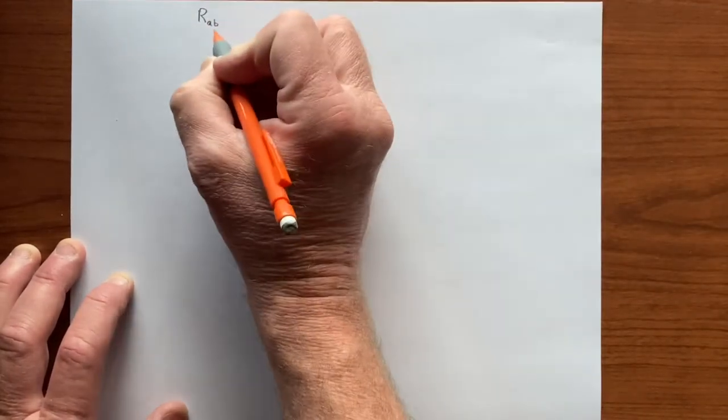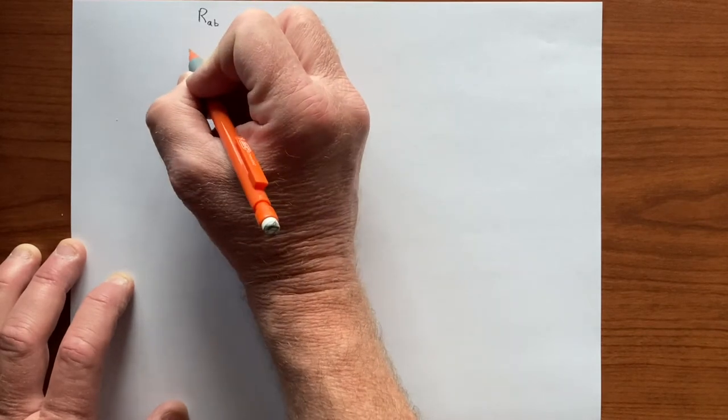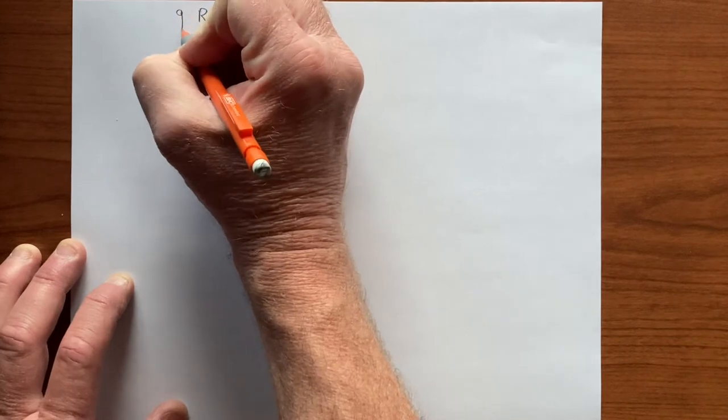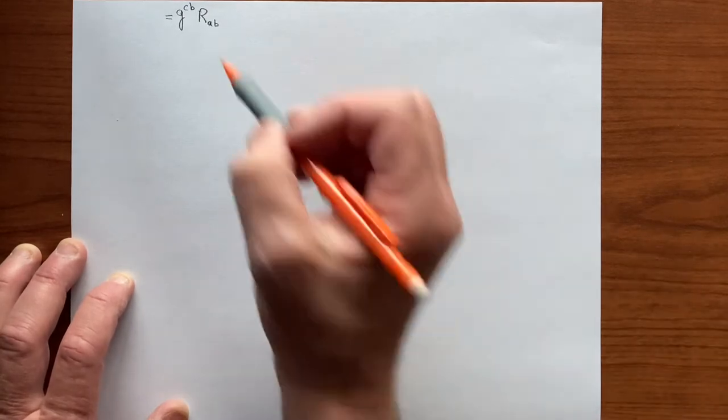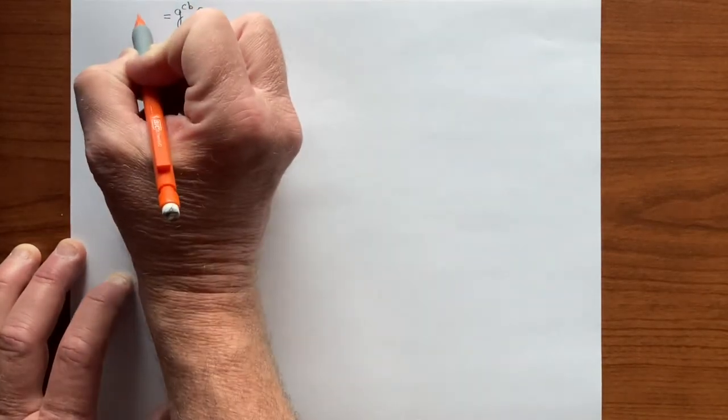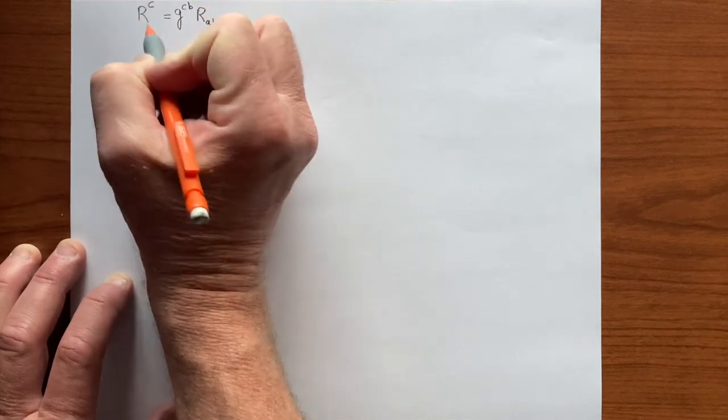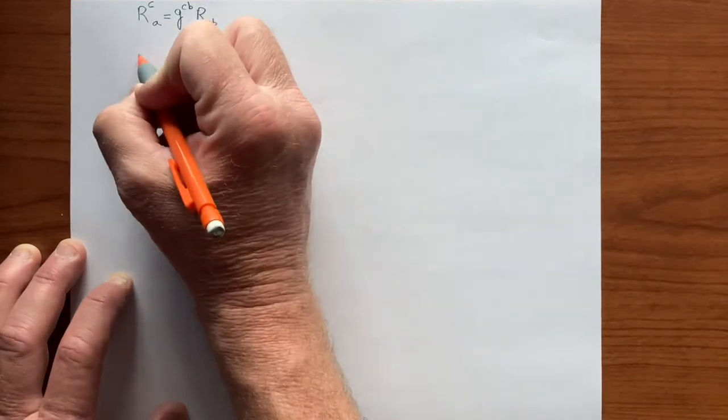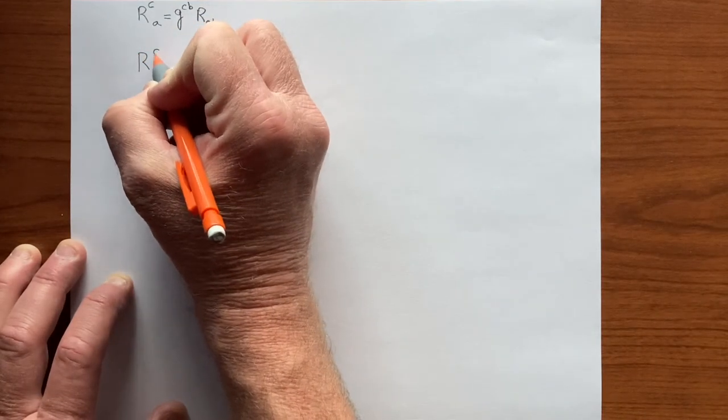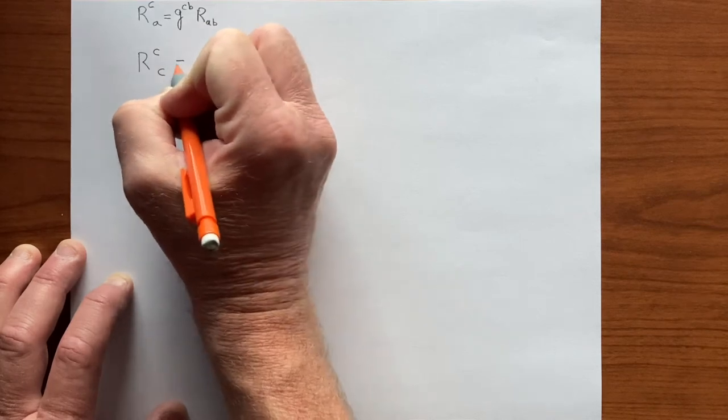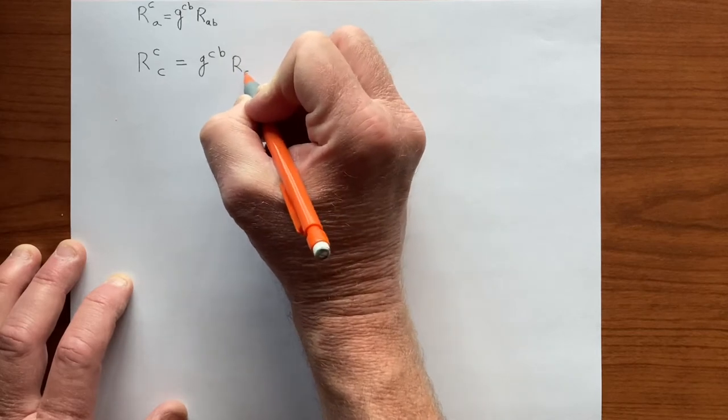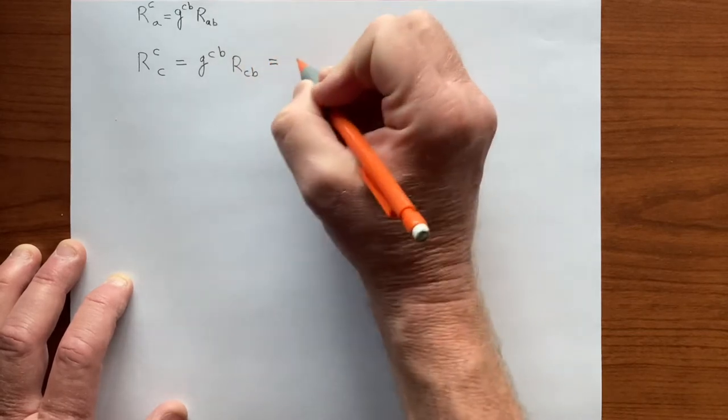So to get a scalar from this, we need to raise the index. Let's apply G^CB, and that'll give us, right, we're summing over B, so that gives us an R^C_A.